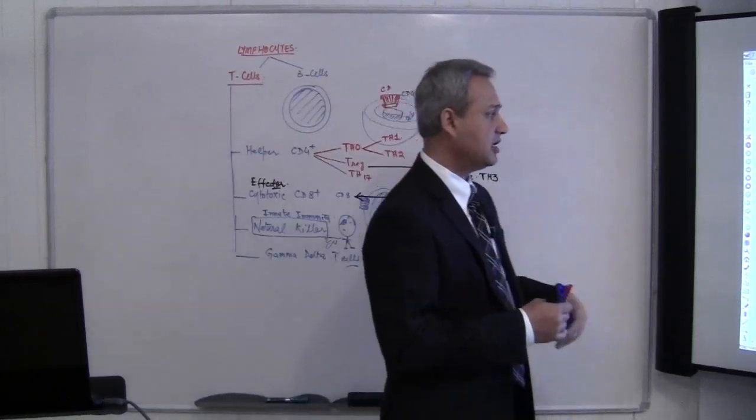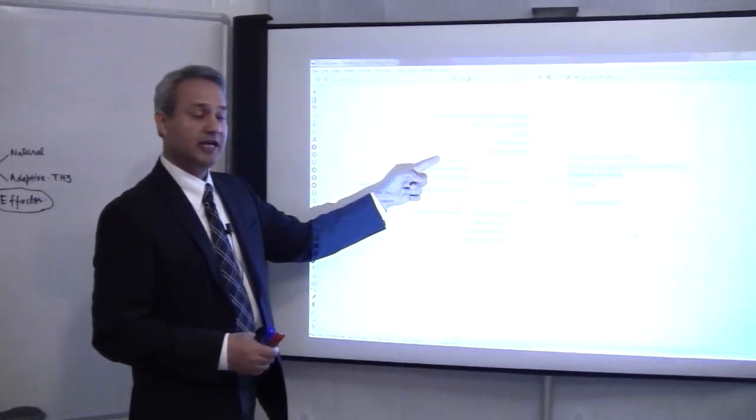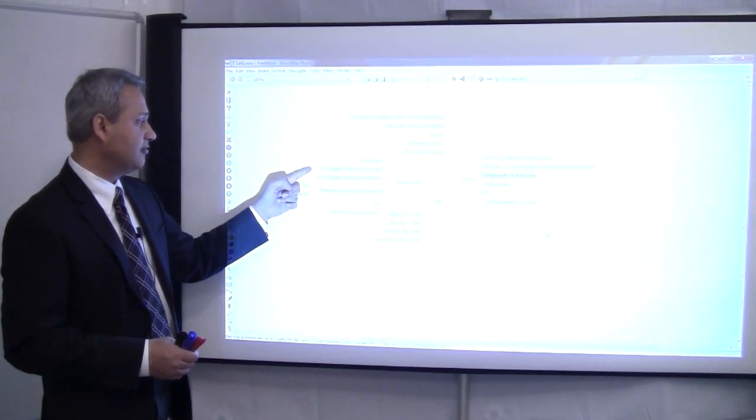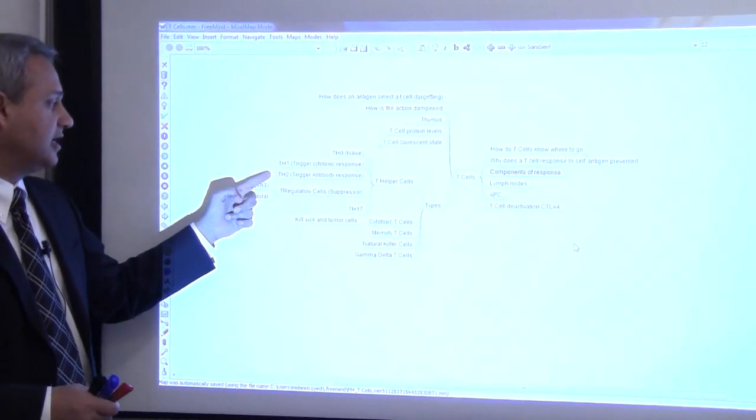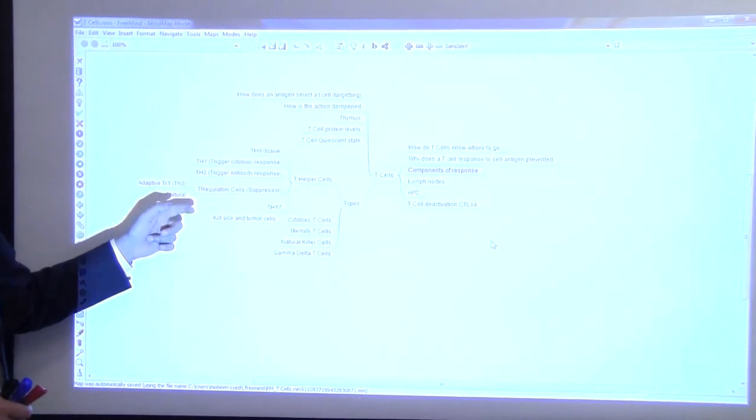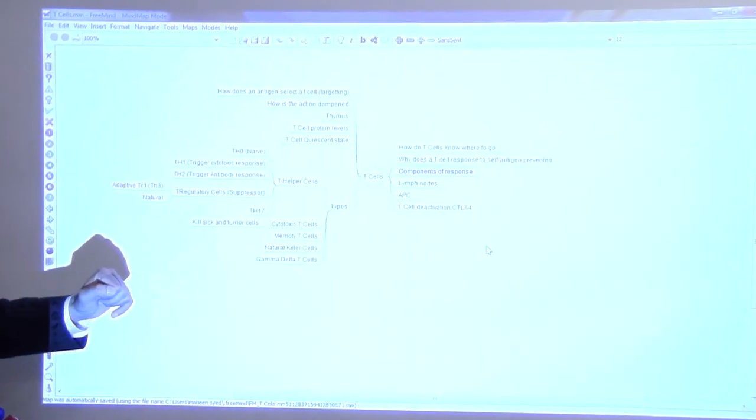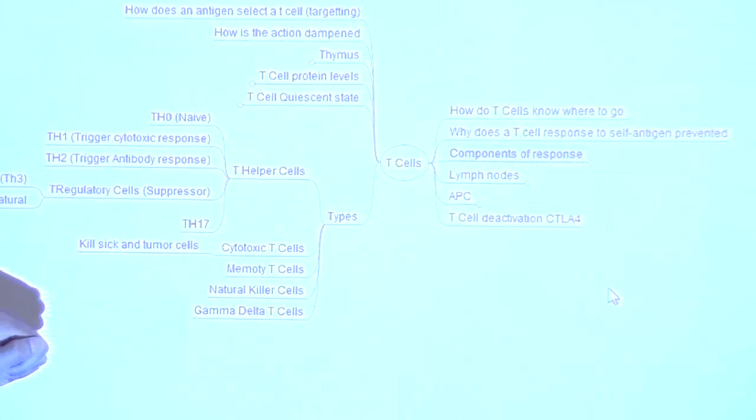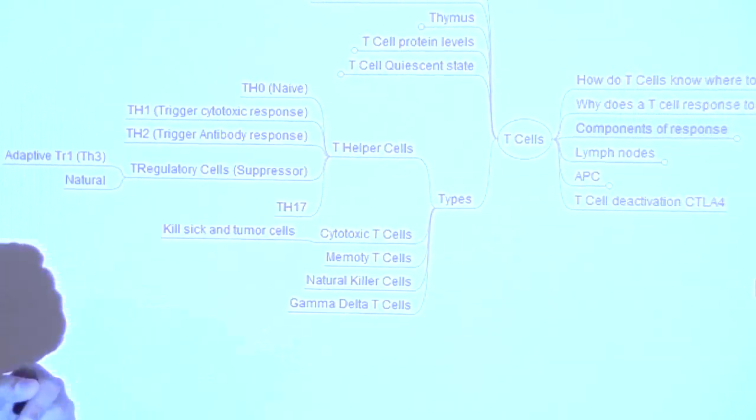If you see here, we have T helper, in that we have T helper 0 naive cells, T helper 1 which trigger cytotoxic response, T helper 2 antibody response, then regulatory cells which are adaptive and natural, and T helper 17. Then we have cytotoxic T cells, memory T cells, natural killer, and gamma delta.